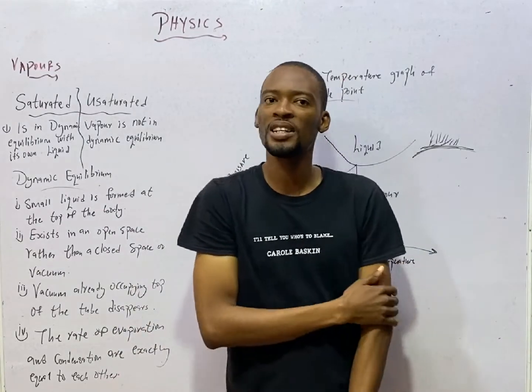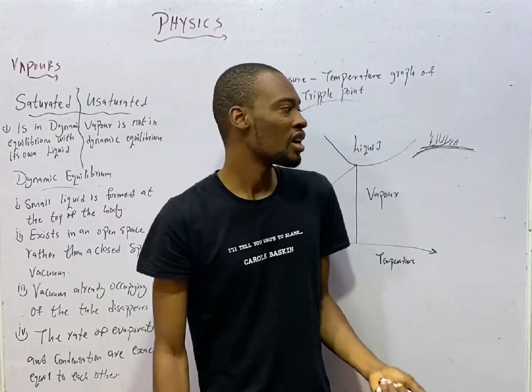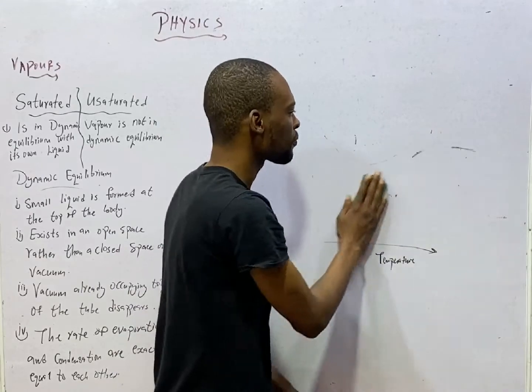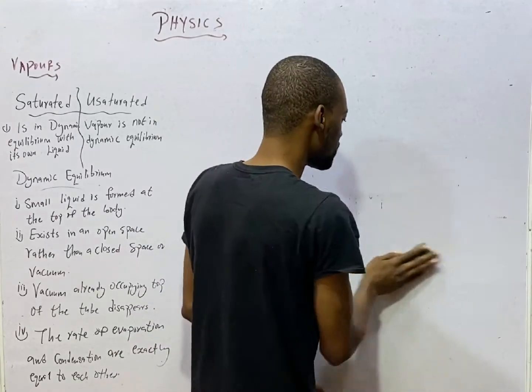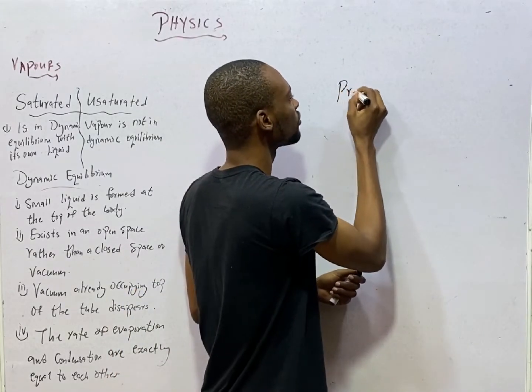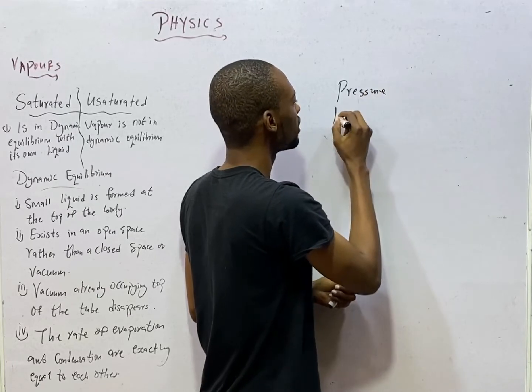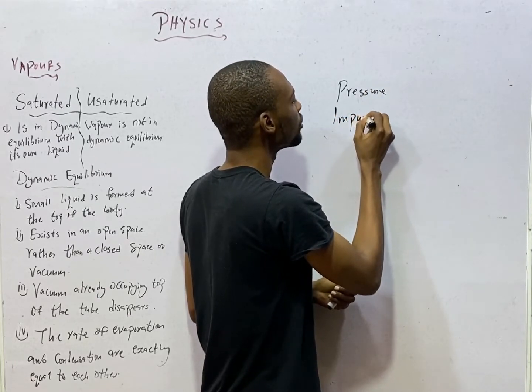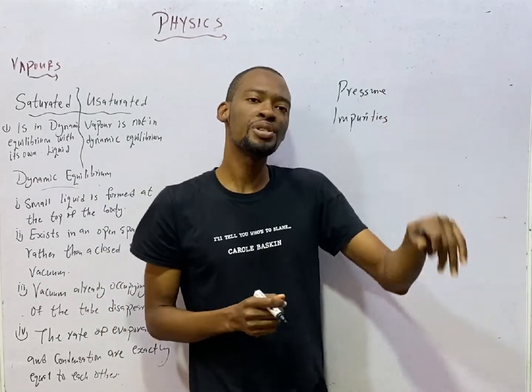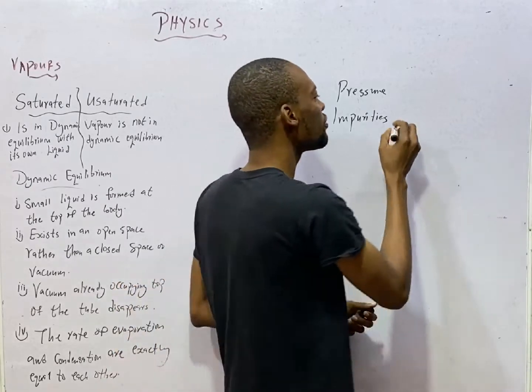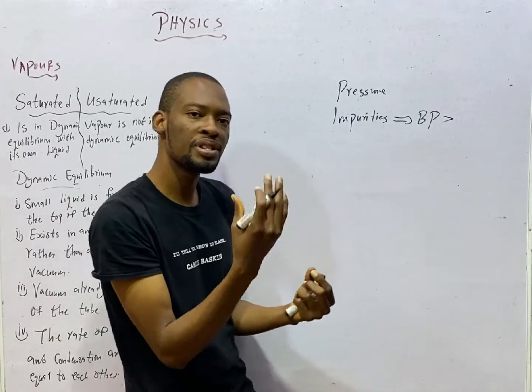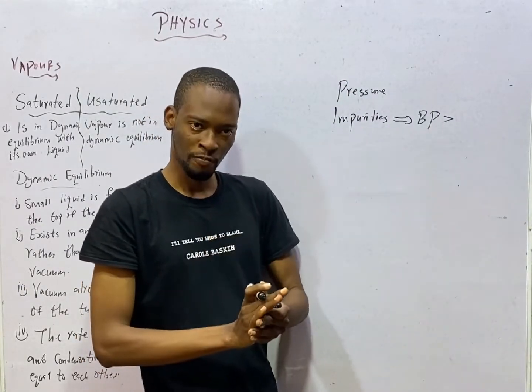I told you that boiling or boiling point is the temperature at which the saturated vapor pressure is equal to the atmospheric pressure. And there are factors that affect boiling point. The factors affecting boiling point are pressure and impurities. When you add impurities to a liquid, the boiling point increases. Which means impurities increase boiling point.